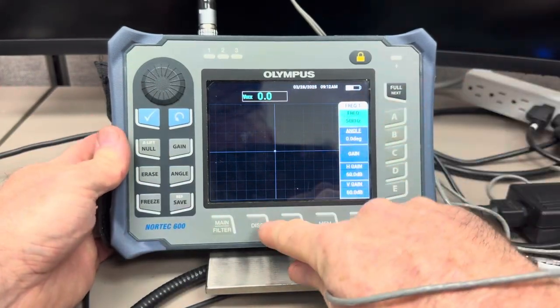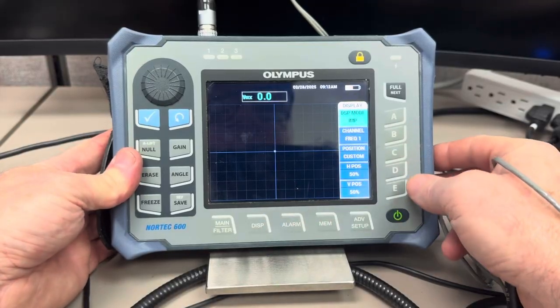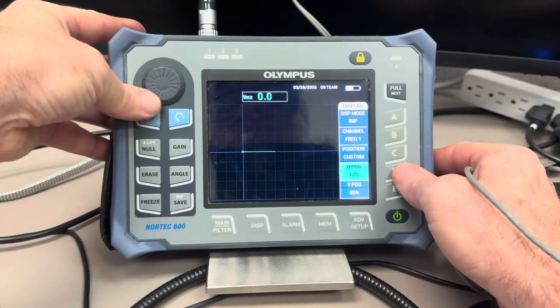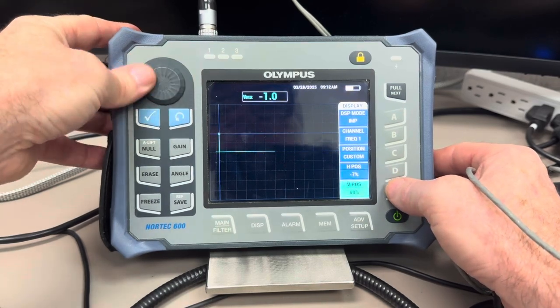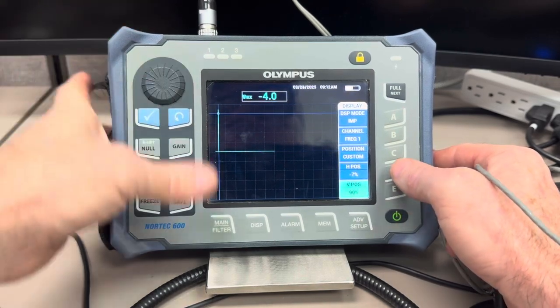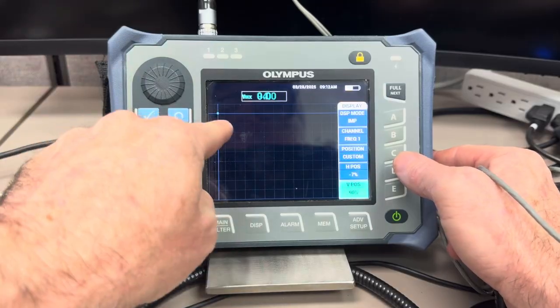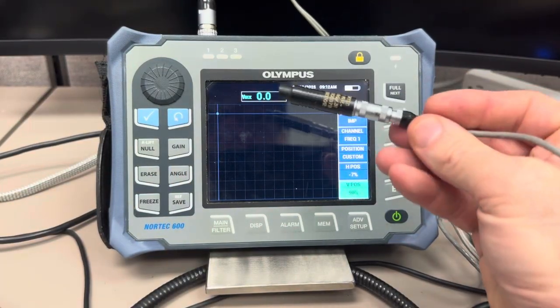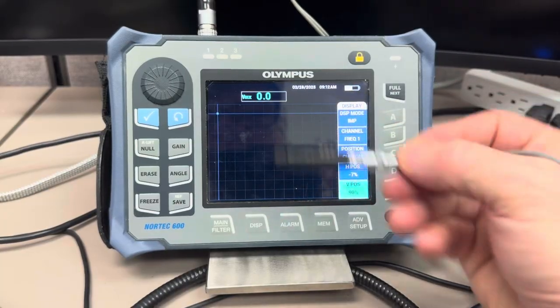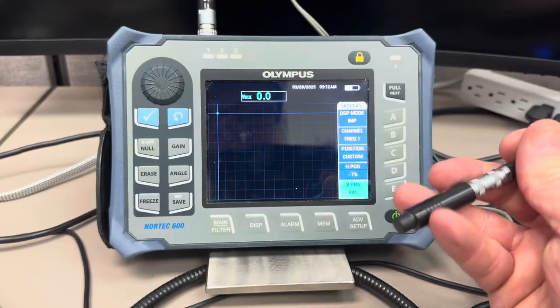And the way you do that is you go into the display menu, horizontal position, you bring that over right about in there somewhere. And then you take the vertical position and go up. So now when you hit null that's where your operating point is. Our coil is unloaded. That's why no matter where I move my probe the null point stays put right there because that's where I set it.